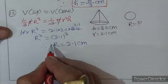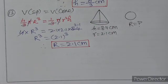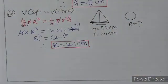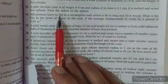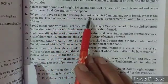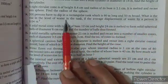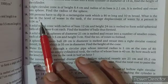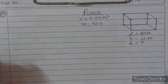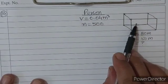Sphere की radius = 2.1 cm। यही calculate करनी थी — question number 13 complete। बढ़ते हैं question number 14 की तरफ। Q14: 500 persons have to dip in a rectangular tank which is 80 m long and 50 m broad. What is the rise in the level of water if average displacement of water by a person is 0.04 m³?